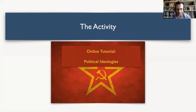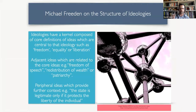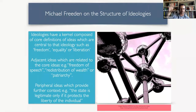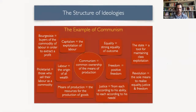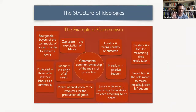Here's a slide I present to students presenting Freeden's key elements for the analysis of ideologies: ideologies have a kernel composed of core definitions of ideas such as freedom, equality, or liberty; then adjacent ideas related to the core ideas; and peripheral elements that provide further context. On the next slide I provide an example for students — an example of communism: core ideas, adjacent ideas, and peripheral ideas. The important thing to stress to the student is that this is not the right answer — this is one person's reading of a particular ideology — but I am demonstrating what they're going to be required to do in the next exercise.